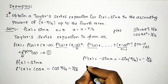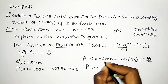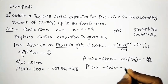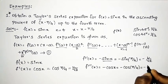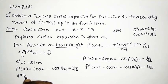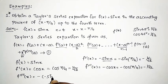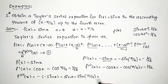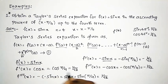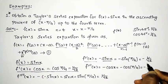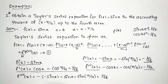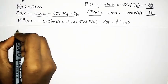Next, the third derivative: f'''(x) is the derivative of -sin(x), which is -cos(x). Substituting x = π/4 gives f'''(a) = -cos(π/4) = -1/√2. Finally, the fourth derivative: the derivative of -cos(x) is sin(x), so f''''(a) = sin(π/4) = 1/√2.